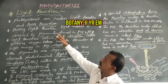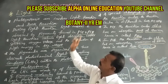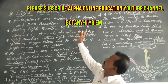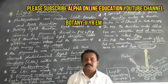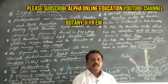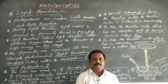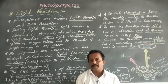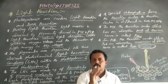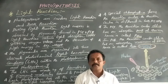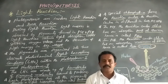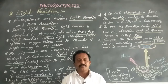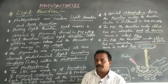Today we are going to discuss about light reactions. Photosynthesis involves light reactions and dark reactions, and it takes place in the chloroplasts of green plants. What is the meaning of light reaction and what is the meaning of dark reaction?